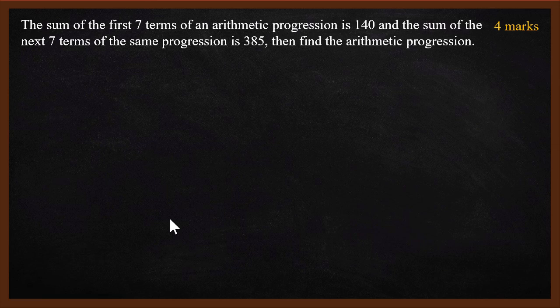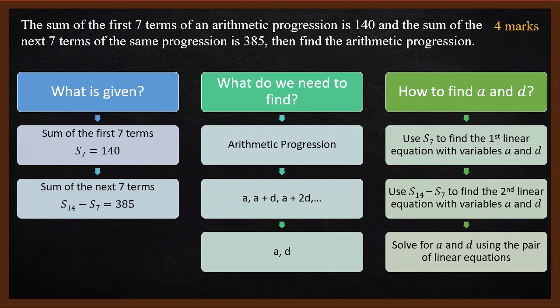The sum of first 7 terms is 140, sum of next 7 terms is 385. Find the arithmetic progression.